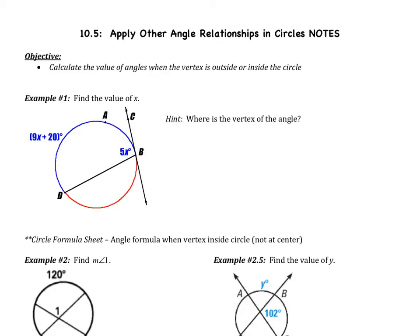Starting with example one, this is a review — not a problem you've seen before, but you should know how to do it. The hint is: where is the vertex of the angle? Our vertex is at B, so our vertex is on the circle. When the vertex is on the circle, the angle is one half of the arc.